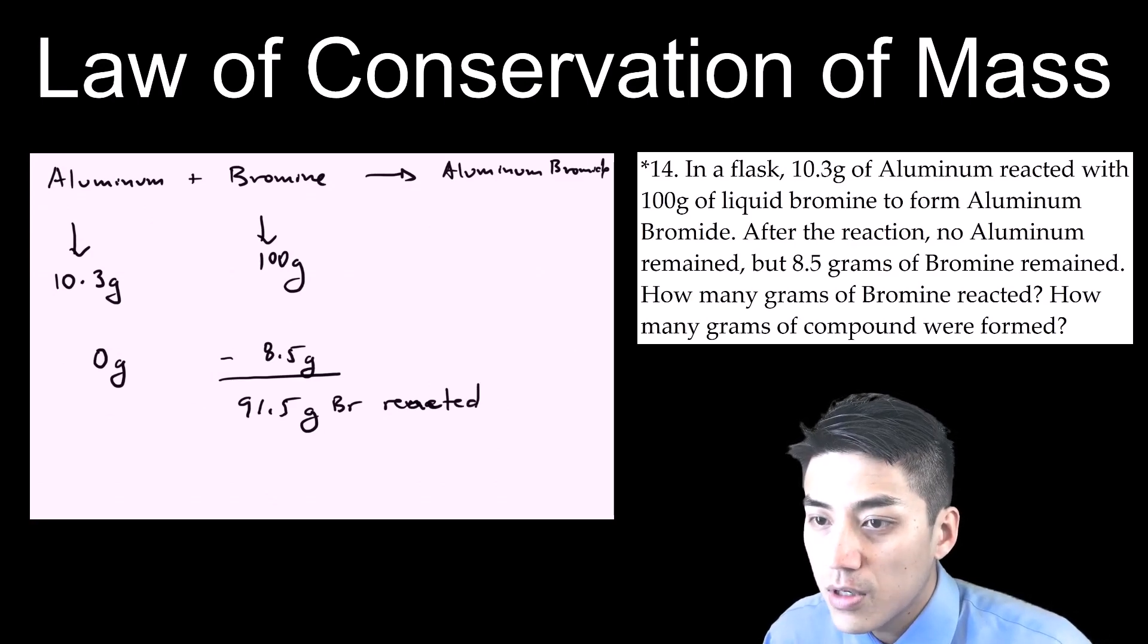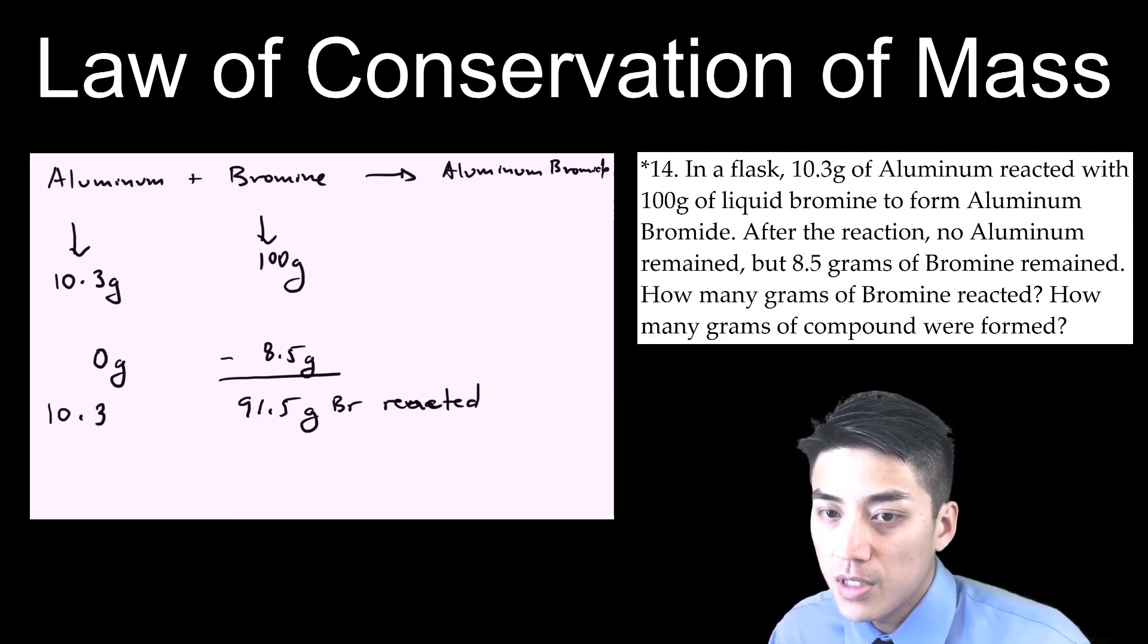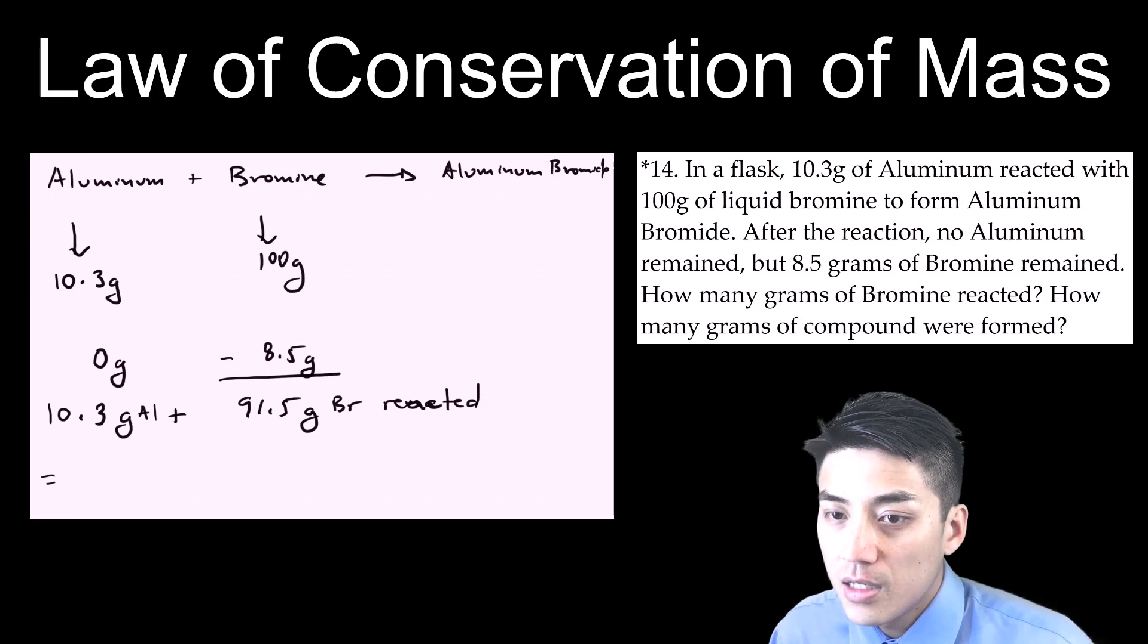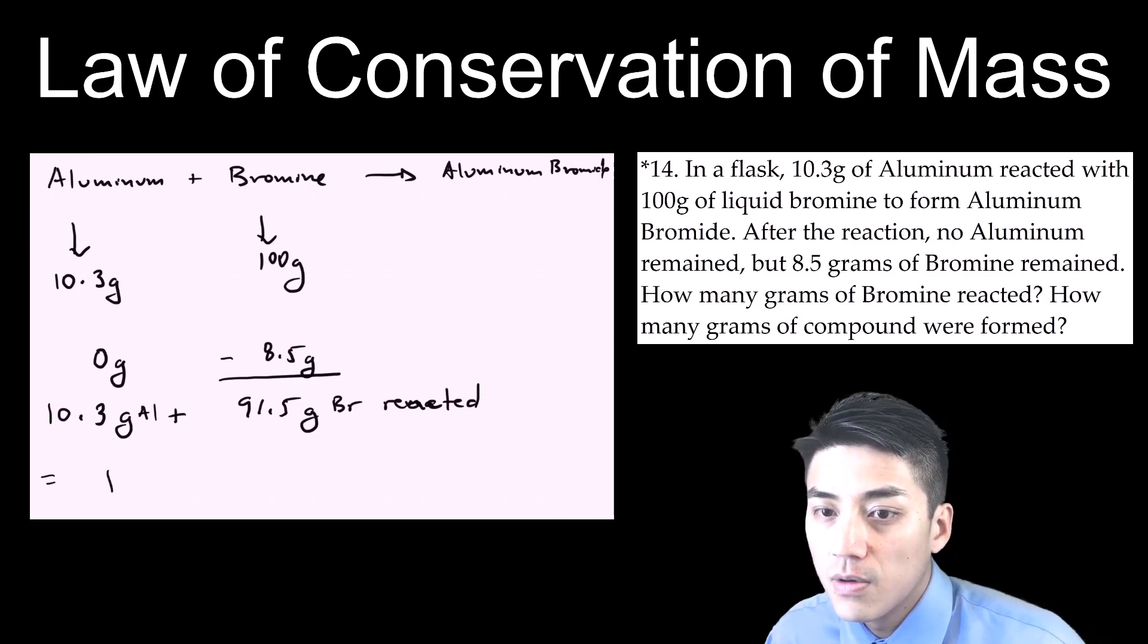And the second part of the problem, how many grams of compound were formed? So now you're going to go 10.3 for aluminum because all of it was used up in the reaction, plus the 91.5 grams of bromine. And you add the two numbers up, you're going to get 101.8 grams. So that's the total mass of compound that formed from this reaction.